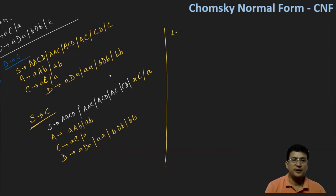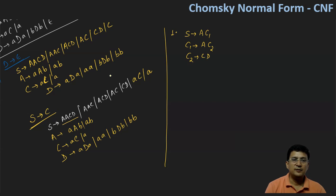Now we check which productions are already in Chomsky normal form and which ones we need to convert, and we start one by one. First, our production is S produces AACD and we will resolve it. So we get S produces A and let's call it C1. So let's say C1 produces A followed by CD.